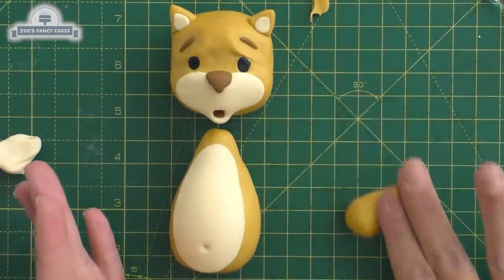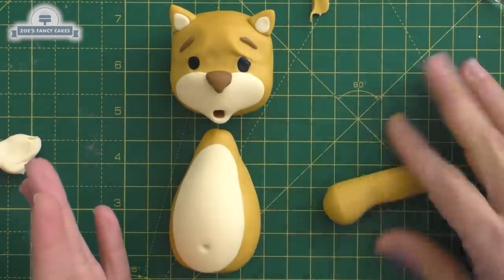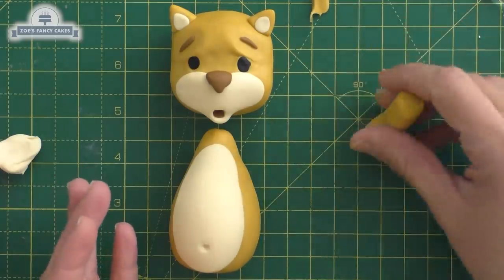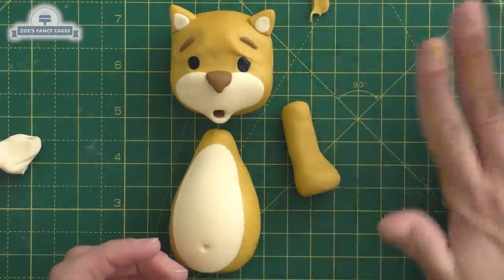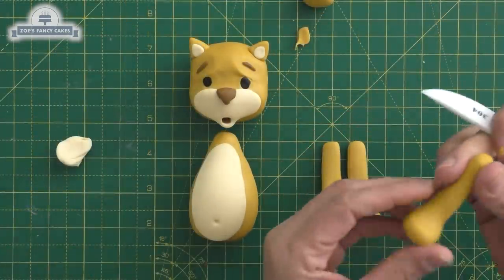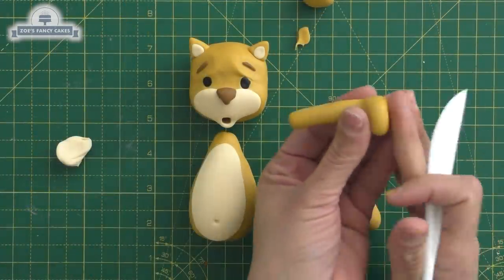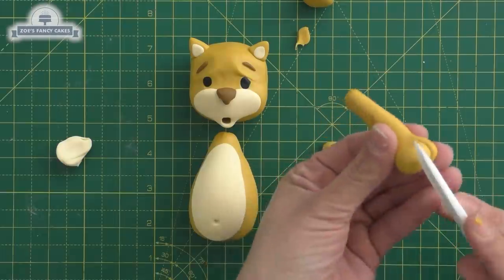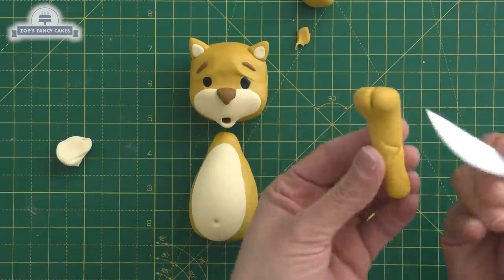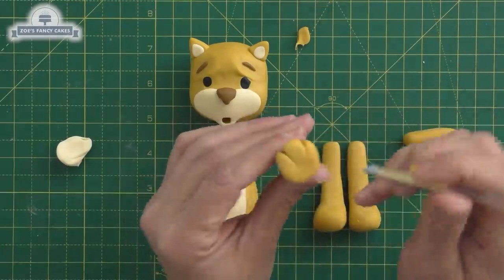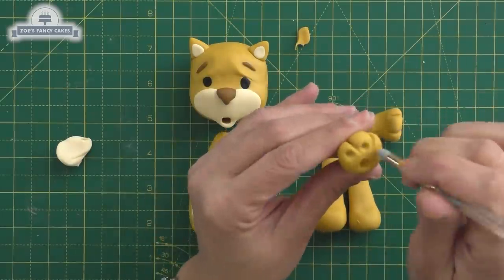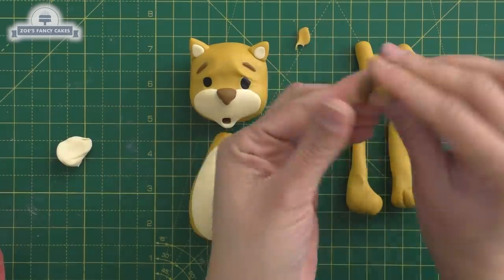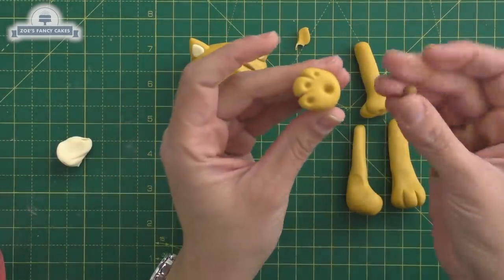She's going to make all four of its legs in exactly the same way. Just rolling out the leg with more pressure at one side than the other, leaving a fat bit for the foot. Put little crease lines in, a couple of little toes. Make indentations underneath where the paw pads are going to go, and then Marisol's going to make some small balls in brown and just fill in those little spaces that she's made.